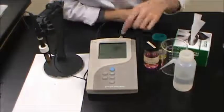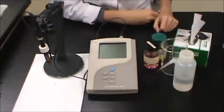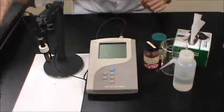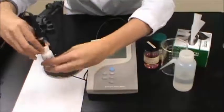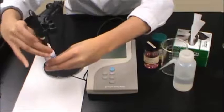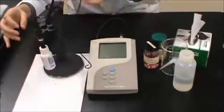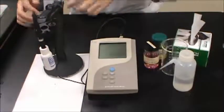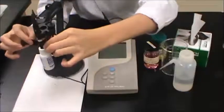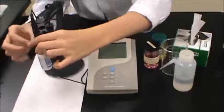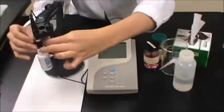The instrument can also be turned off whenever you are finished using it. Replace the electrode storage bottle on the end of the pH probe and put the black tape back over the vent hole of the pH probe.